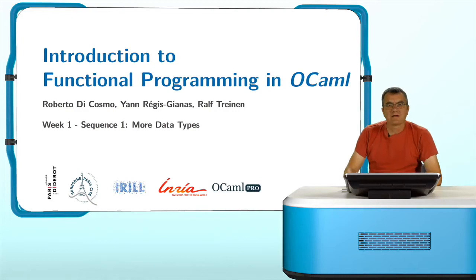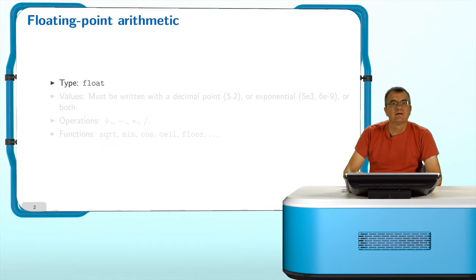Welcome back. So let's continue our exposition of basic data types in OCaml and we continue with the type of floating point numbers.